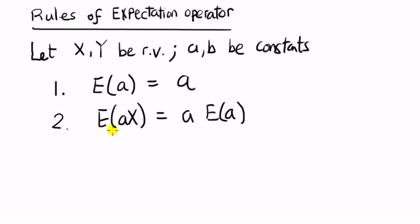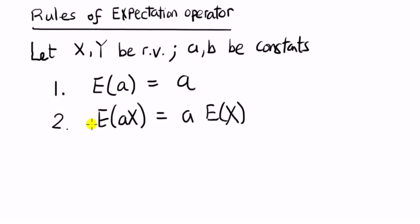Next, the expectation of a number multiplied by a random variable is equal to that number times the expected value of the random variable. So the expected value of a constant times a random variable is equal to the constant times the expected value of the random variable — it's like the constant is dragged out of the expectation sign.